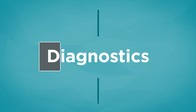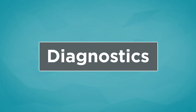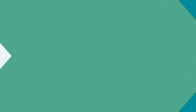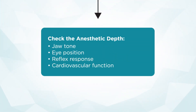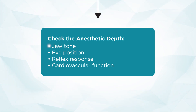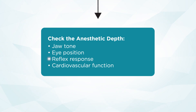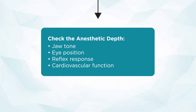In determining what strategy we need to take, our first step is going to be determining what the patient's anesthetic depth is. We're going to want to check the patient's jaw tone, evaluate eye position, and assess for palpebral reflex, as well as factor in those hemodynamic changes including an elevation in blood pressure as compared to the patient's baseline.